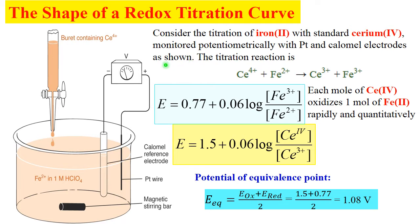Let's consider the simplest titration curve. Consider titration of Fe2+ ions, iron 2, with standard cerium 4+. We'll monitor it potentiometrically with platinum electrode and some reference. It can be calomel, can be AgCl electrode.